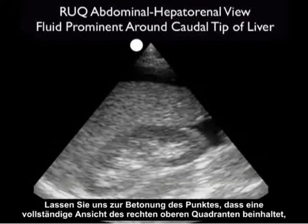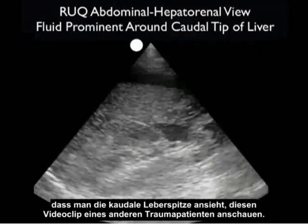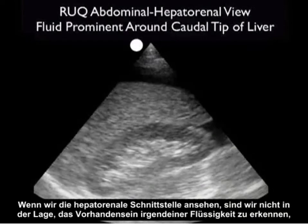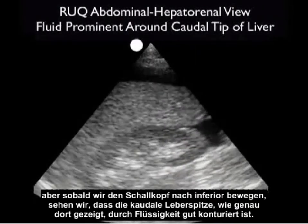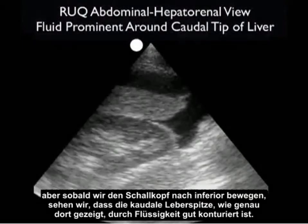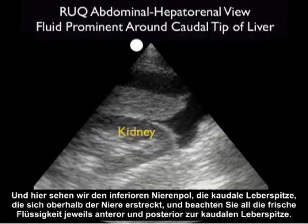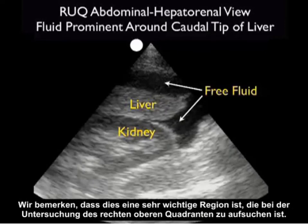To emphasize that a complete right upper quadrant view includes looking at the caudal tip of the liver, let's examine this video clip from another trauma patient. At the hepatorenal interface we fail to see any fluid, but as we move the probe inferiorly, we see the caudal tip of the liver well outlined by fluid. We can see the inferior pole of the kidney, the caudal tip of the liver extending above it, and fresh fluid both anterior and posterior to the caudal tip — making this a very important area to assess.